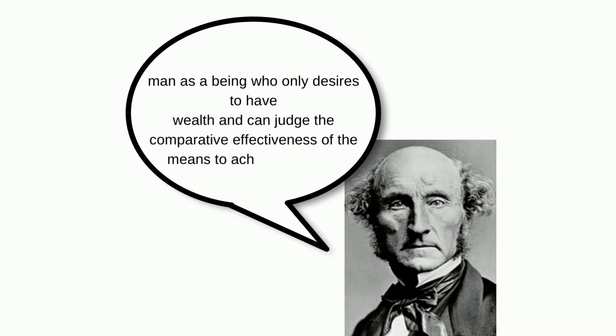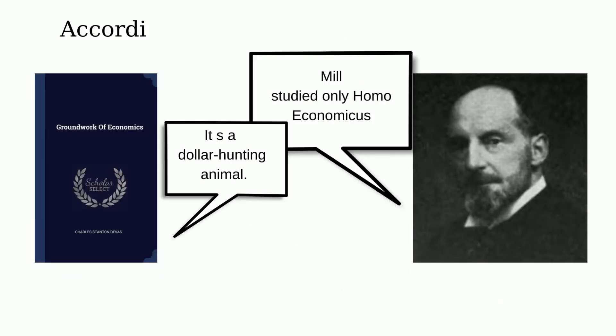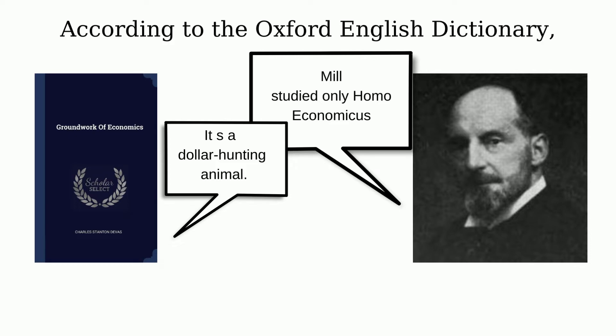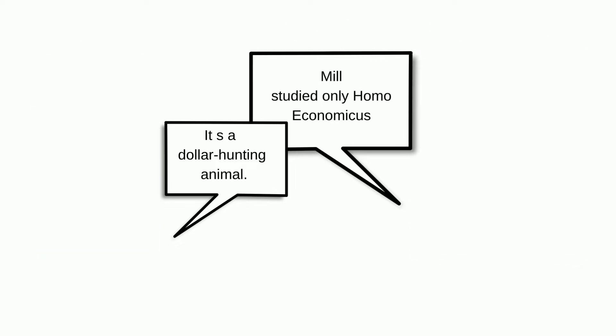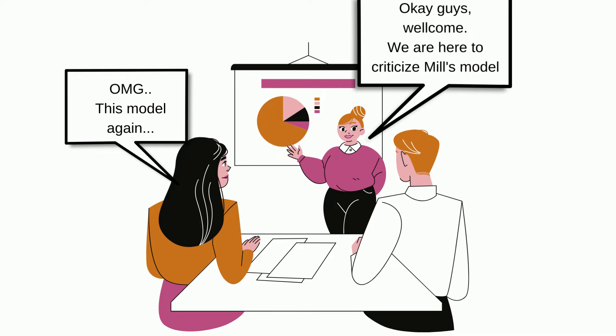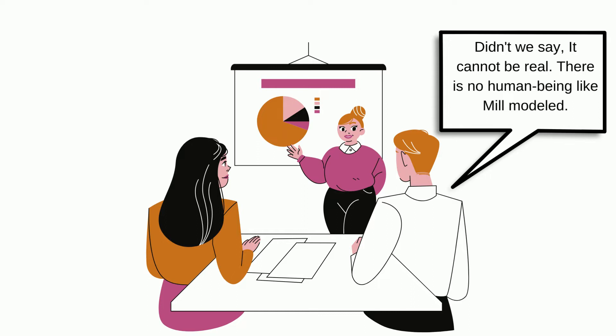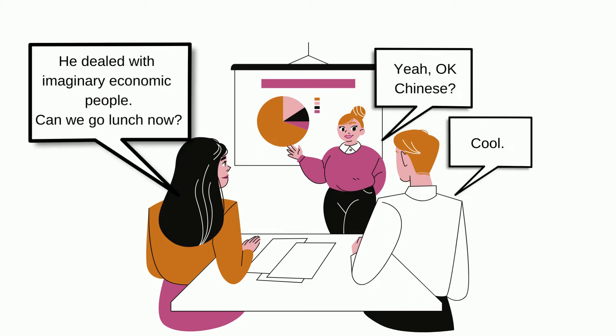However, as can be seen, although Mill modeled homo economicus, the term was actually coined to criticize this view of Mill. According to the Oxford English Dictionary, the earliest written use of the term is found in Charles Stanton Devis' 1883 book The Groundwork of Economics, where it is stated that Mill studied only homo economicus — a dollar-hunting animal. An equivalent meaning has recently been used to criticize this model of Mill, saying that Mill's model could not be real and that Mill was dealing with imaginary economic people. Since then, the concept of homo economicus has been widely used in various economic models.